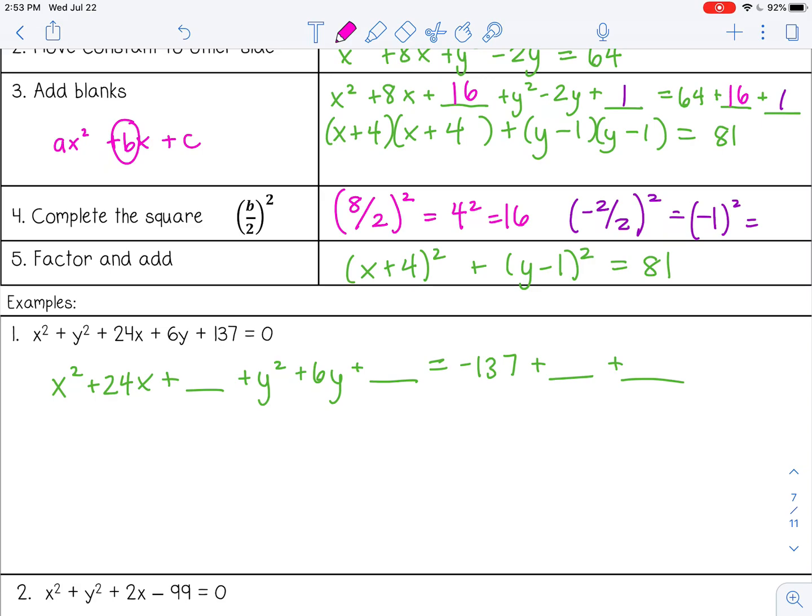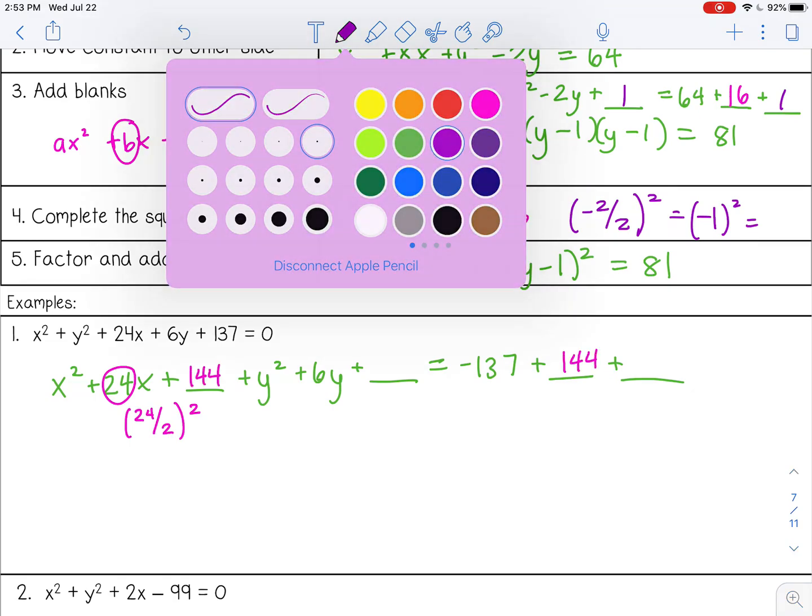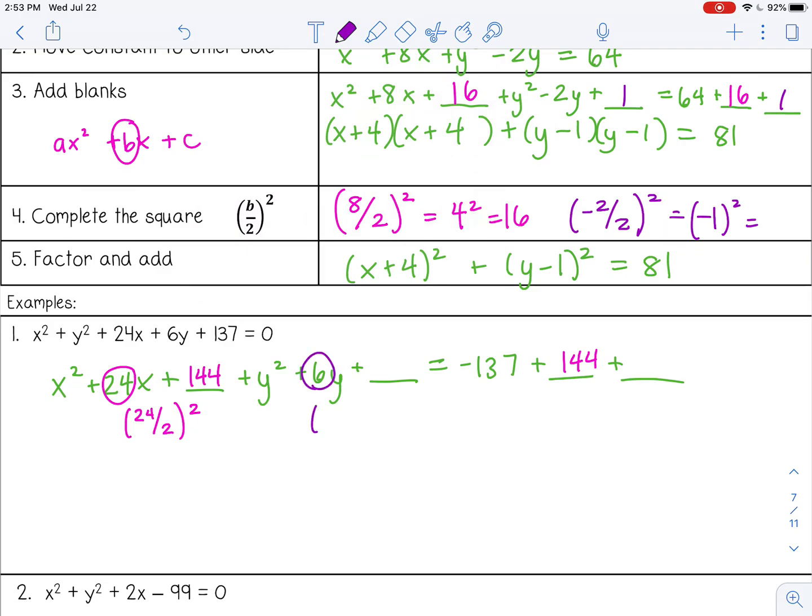Now I need to complete the square, so I need to take the b term, half it, divide it by 2, and square it. So that would be 12 squared, which is 144. Same thing with my y. That would be 3 squared, which is 9.